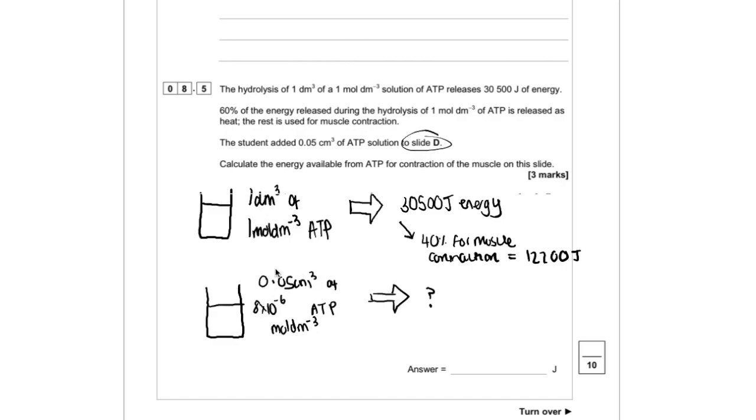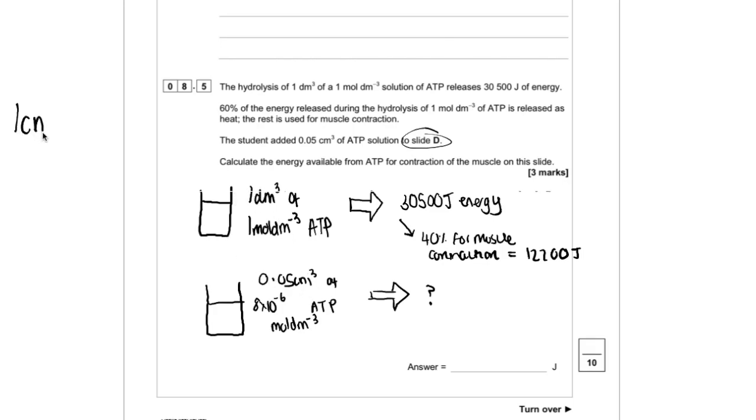So 1 centimetre is equal to 0.1 decimetre because centimetre means a hundredth of a metre and decimetre means a tenth of a metre. But when you're converting from a centimetre cubed to a decimetre cubed, for every extra power of 1 we have, we have to divide by another 10.